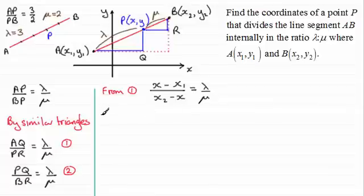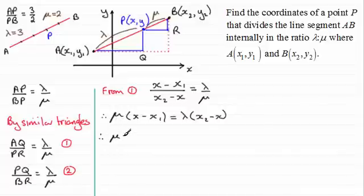And then what I can do is rearrange this equation, multiply both sides by mu and x₂ minus x, and that gives me mu times (x minus x₁) equals lambda times (x₂ minus x). And then I'm going to expand out the brackets and we get mu times x. And then I want to bring the x terms to the same side, so I'm going to add lambda x to both sides and I'm going to add mu x₁ to both sides.